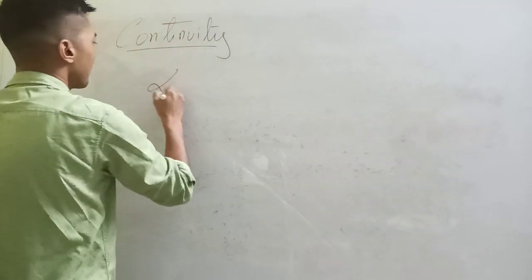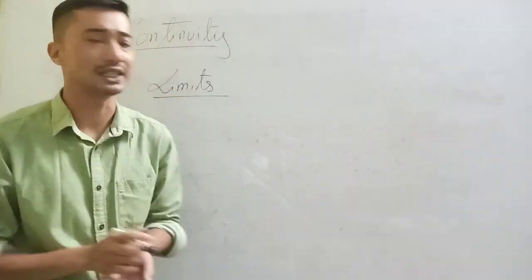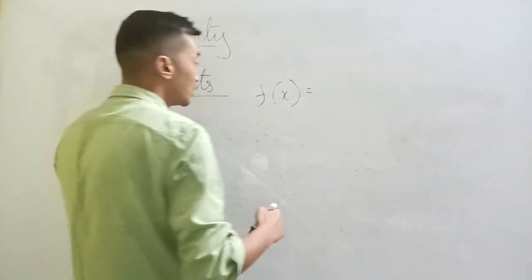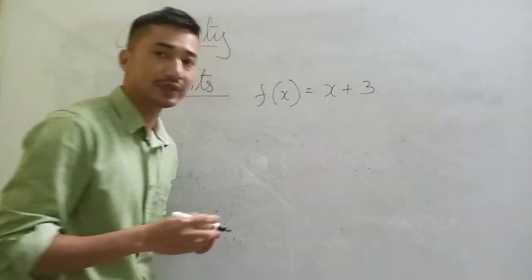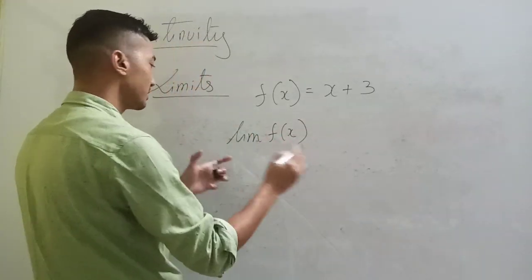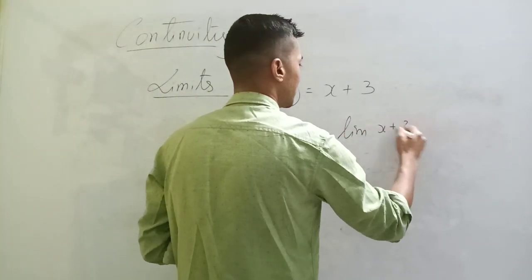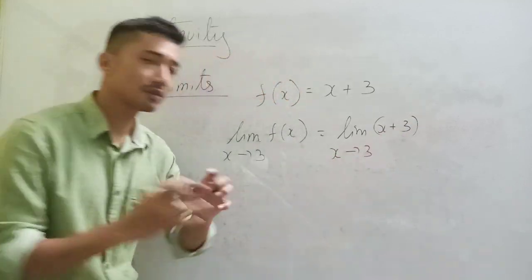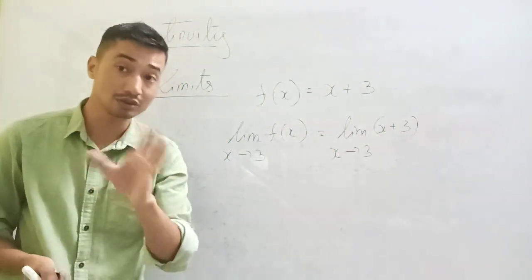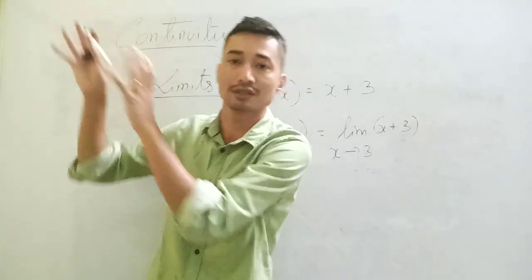Let me quickly go through limits. From limits only we come to continuity. If a function is given — let's say f(x) = x + 3 — then what happens to the function as x tends towards 3? What is the limit of x + 3 as x tends to 3? Most of us just put x equal to 3 and get 6, but that's not really what limits are about. The limit is not about the exact value at that point.